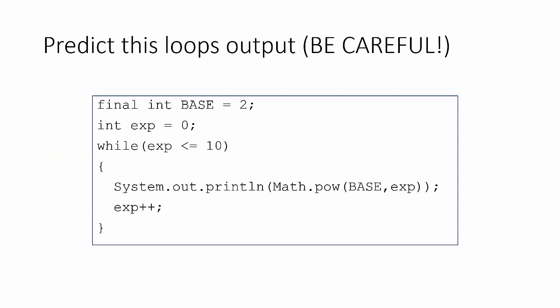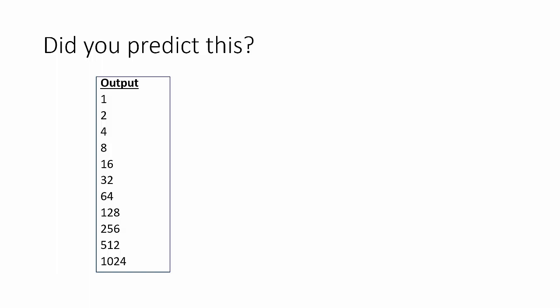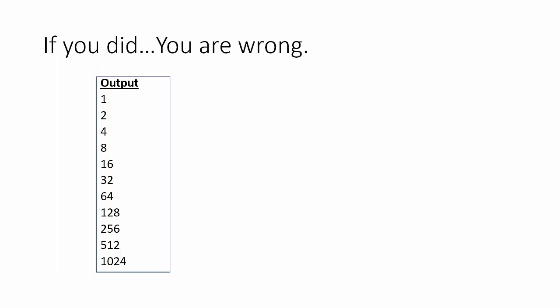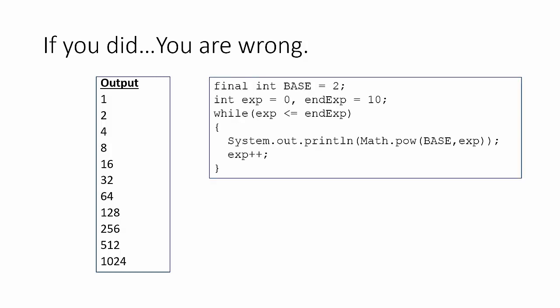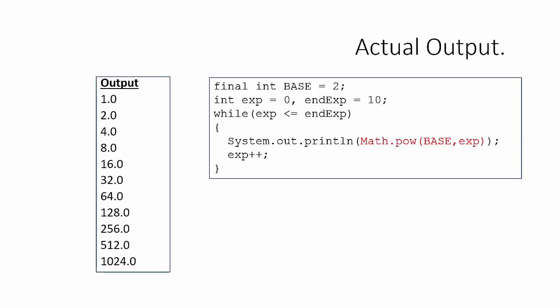Take a moment, pause the video, and try to predict what this loop is going to output. Was that what you predicted? Because if it was, it was wrong. Remember the trick here — we've got to be careful about what our power method in the Math class actually returns. It returns a double value. So our actual output is going to end up looking different. For the AP test, always be cognizant of what the return value of specific methods are and how that's going to affect your outcome.